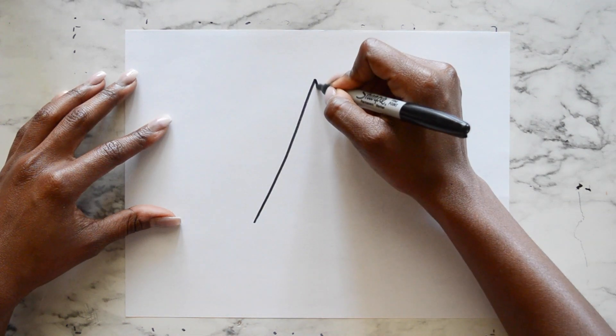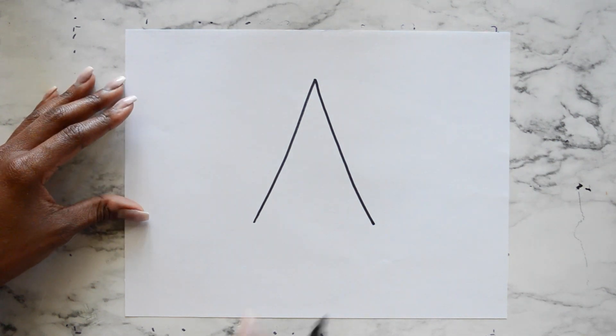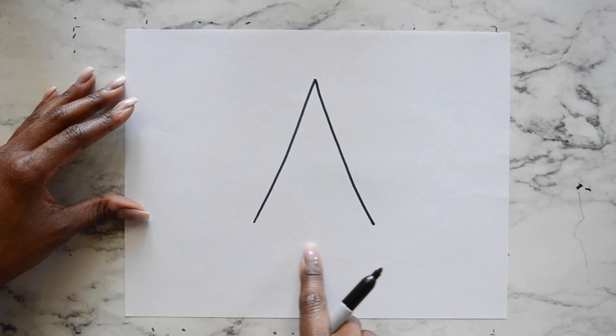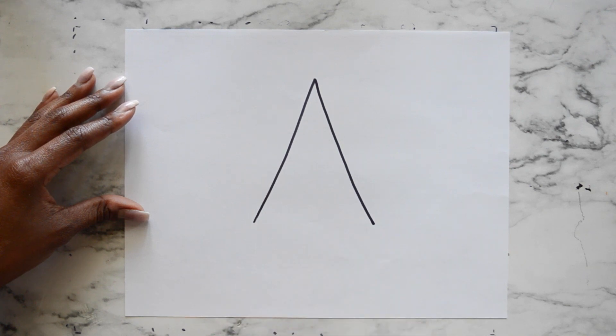To make a cone, let's draw a letter V on our page. And now we need to add a curved, upside-down line connecting these two points together.